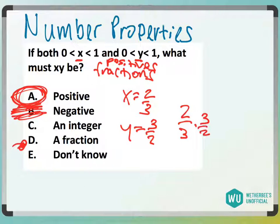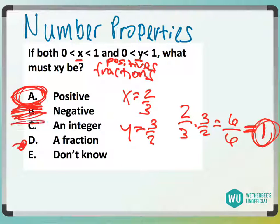What's 2 thirds times 3 halves? Well, that is 6 over 6. They're reciprocals, and a reciprocal times itself is always going to equal 1. So that's an integer.